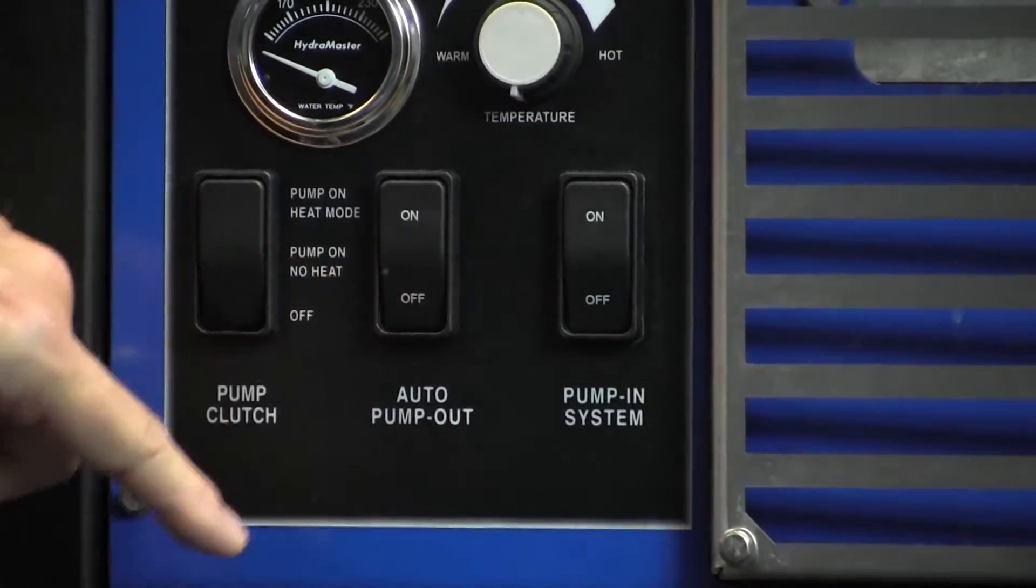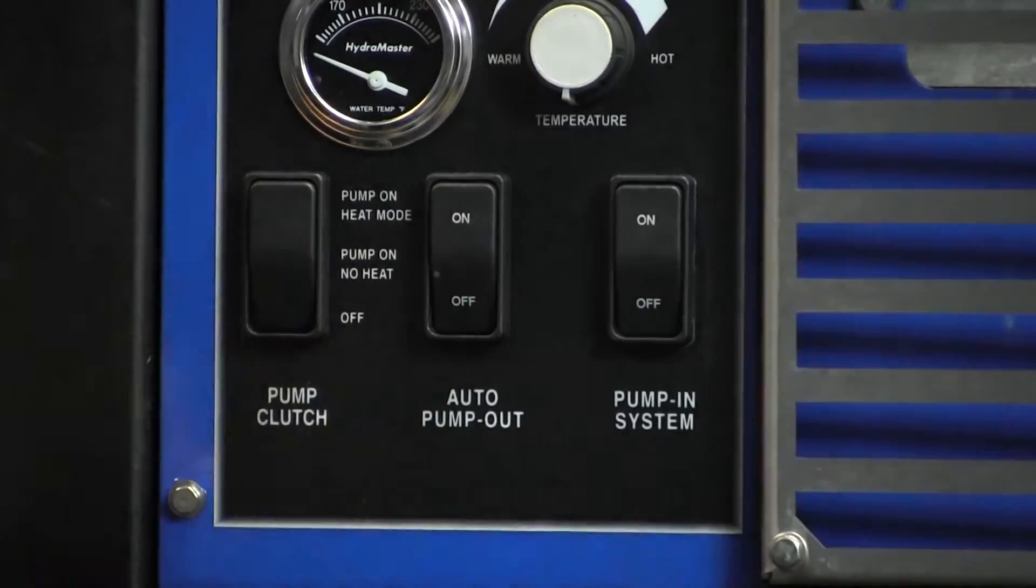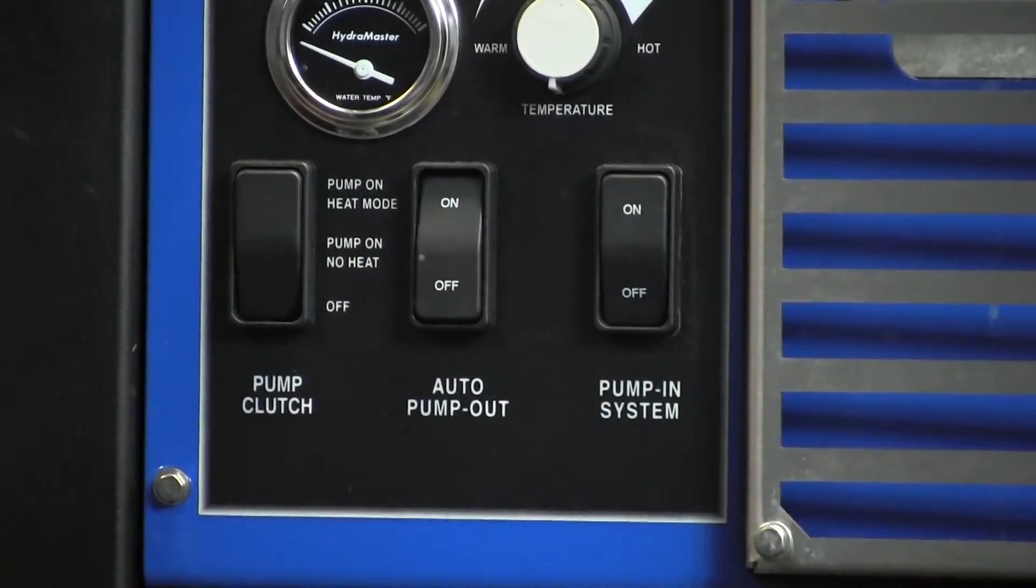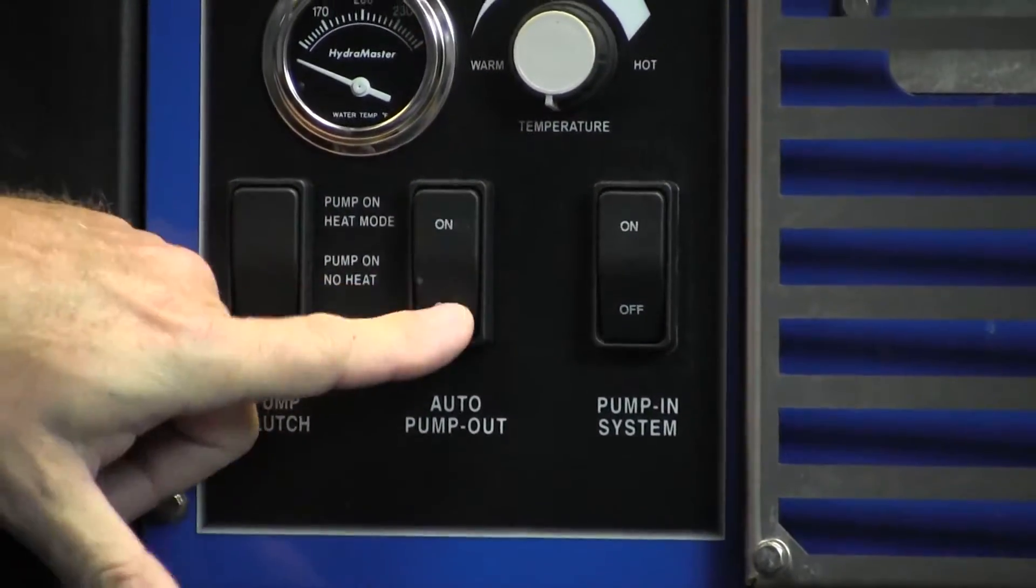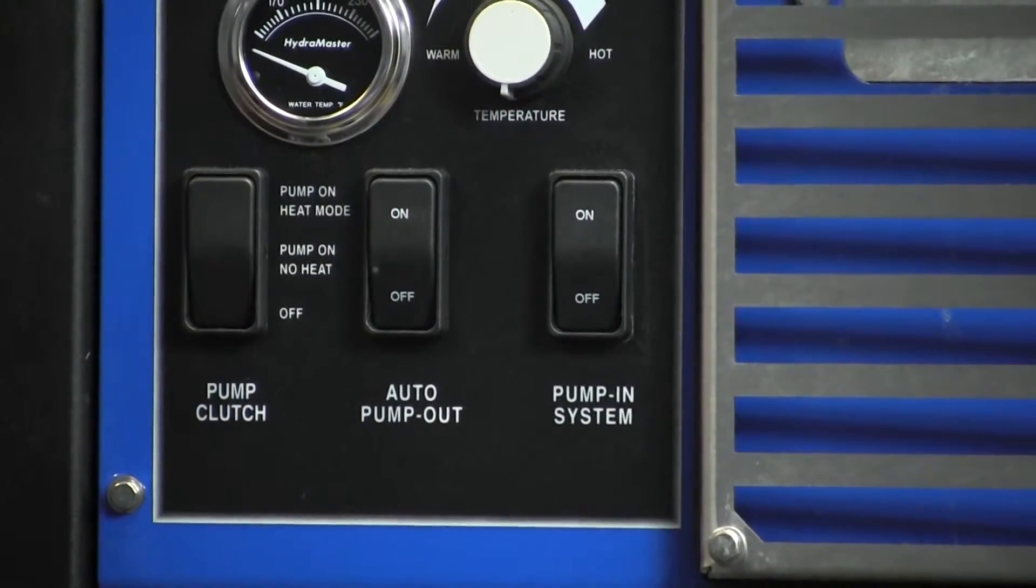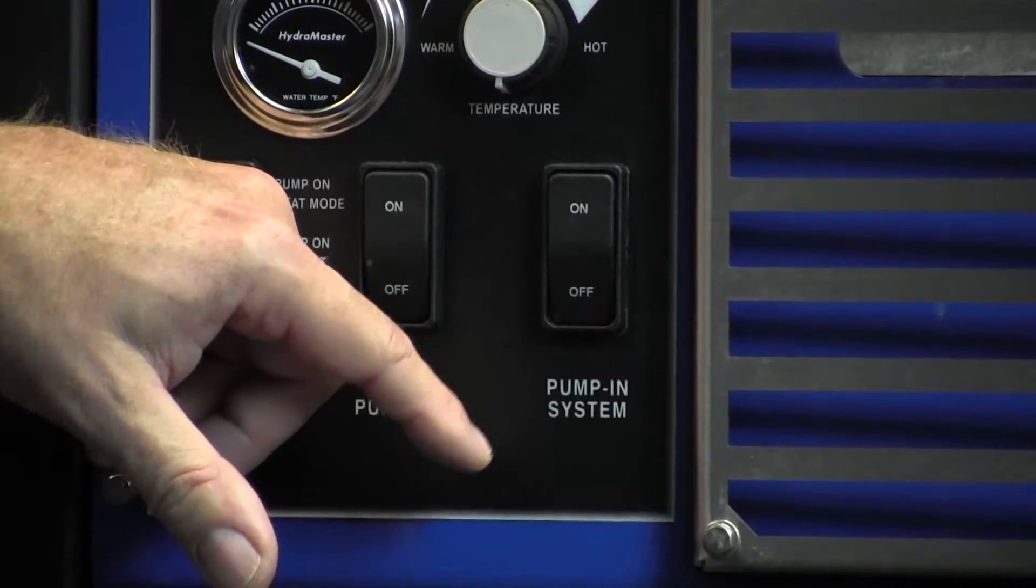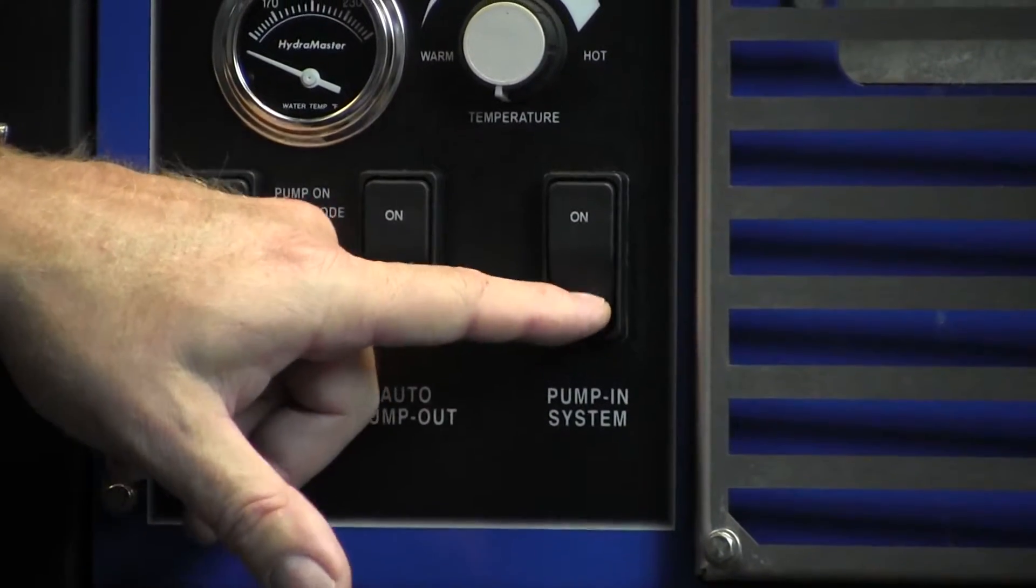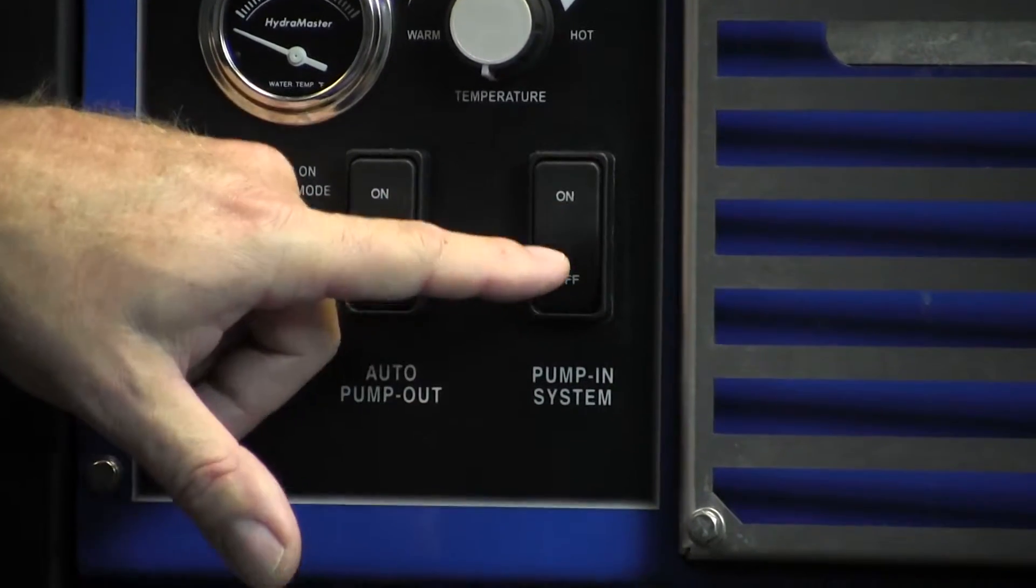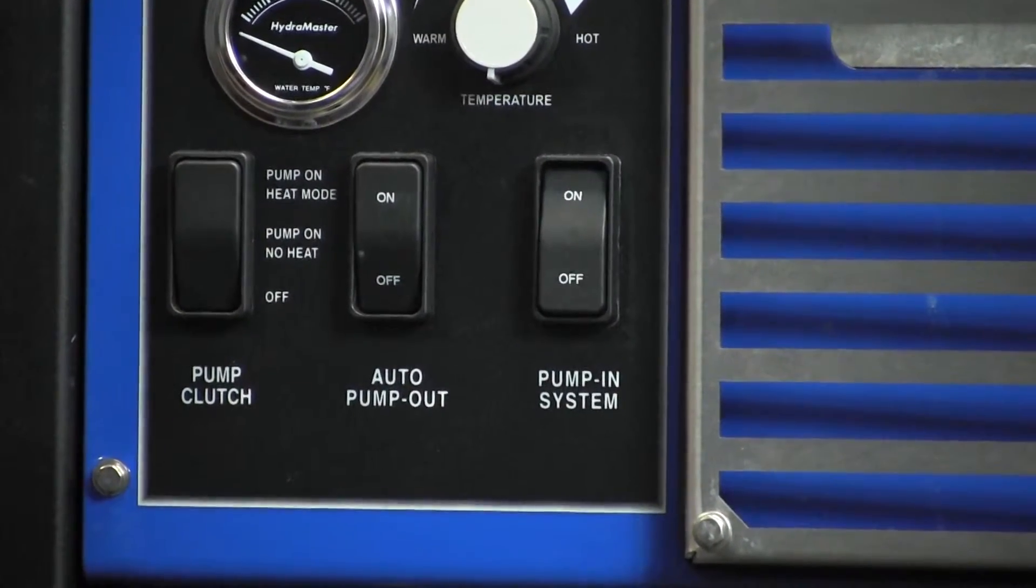We have the auto pump-out mode here, which is your APO. If you've got that on your waste tank, it's already pre-wired. You also have your pump-in system for those of you with a fresh water tank on board your van, so you can get fresh water that way rather than pulling it from the building or home. You've got your pre-wired pump-in system here.